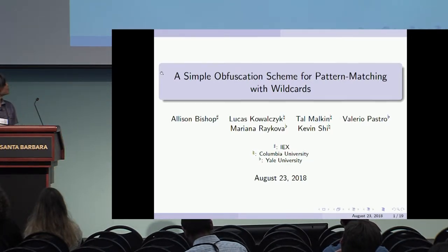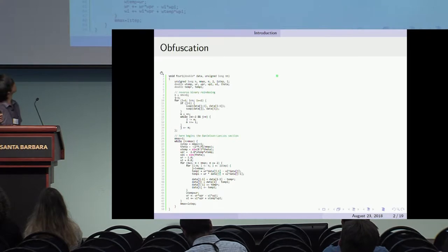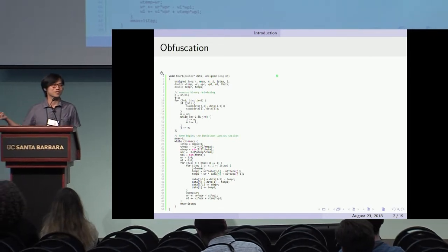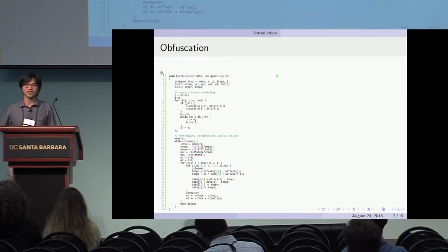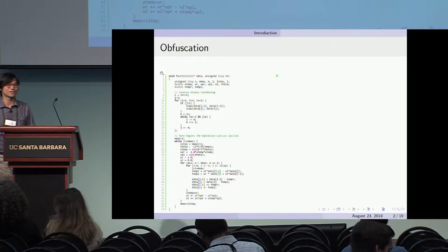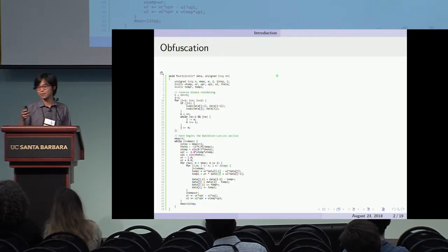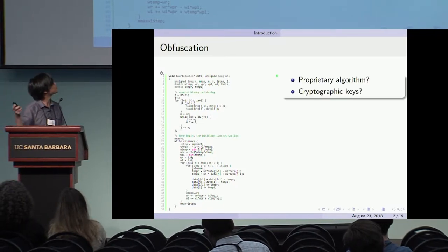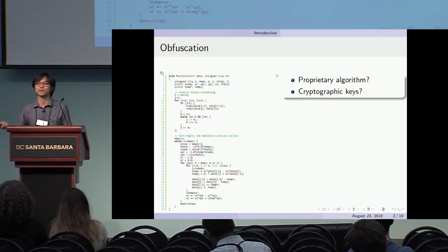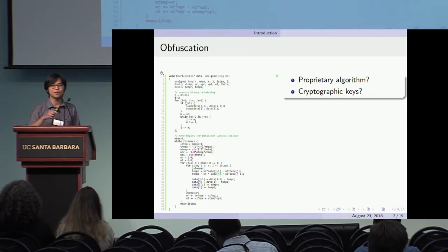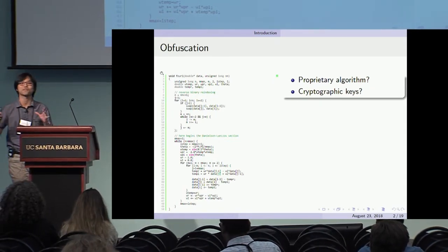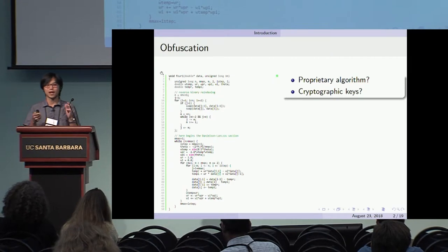So why do we care about obfuscation? Suppose you've written some amazing piece of code and you want everyone to run it — maybe it'll reduce carbon emissions and help save the environment. The problem is within your code, maybe you have a cryptographic secret key and you don't want people to read part of your code and learn something from that.